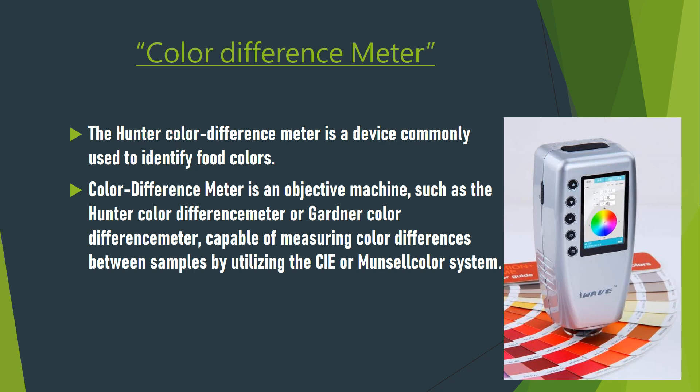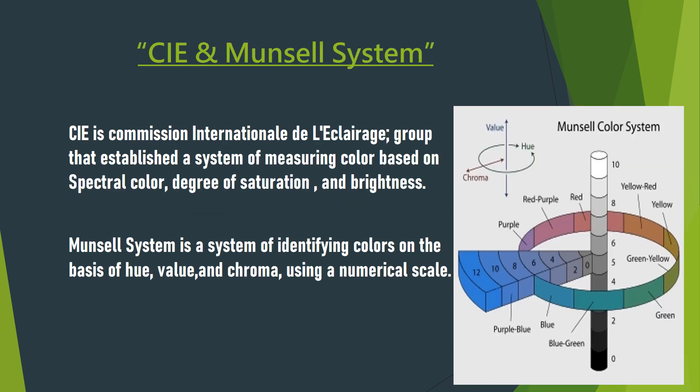The Hunter color difference meter is a device commonly used to identify fruit colors. Color difference meters such as the Hunter or Gardner color difference meter are capable of measuring color differences between samples using the Munsell color system. The Munsell system, established by the Commission Internationale de l'Éclairage, measures color based on spectral color, degree of saturation, and brightness, identifying colors on the basis of hue, value, and chroma using a numerical scale.